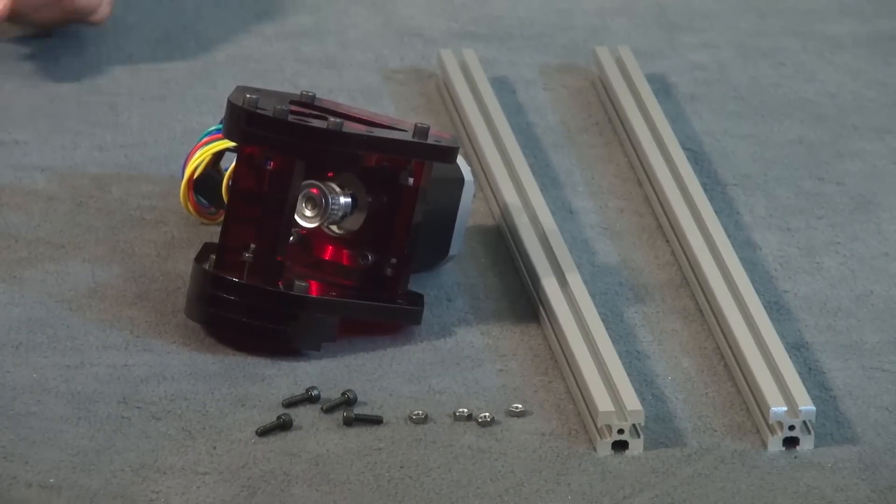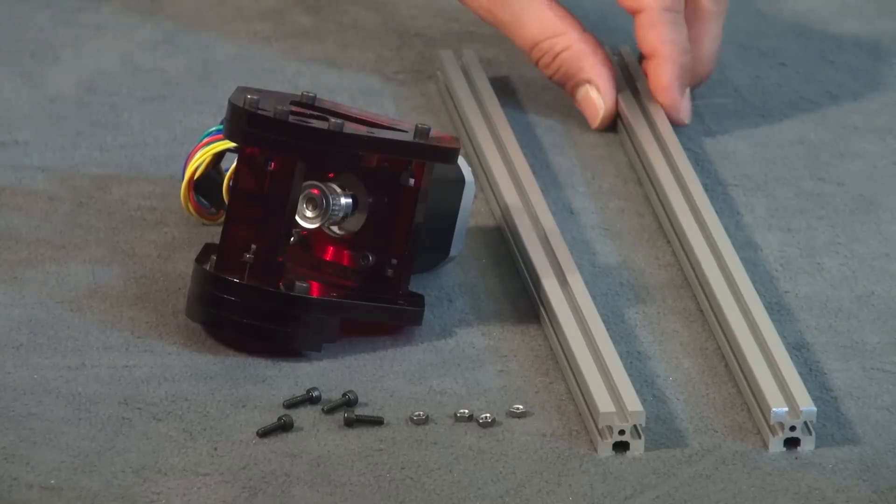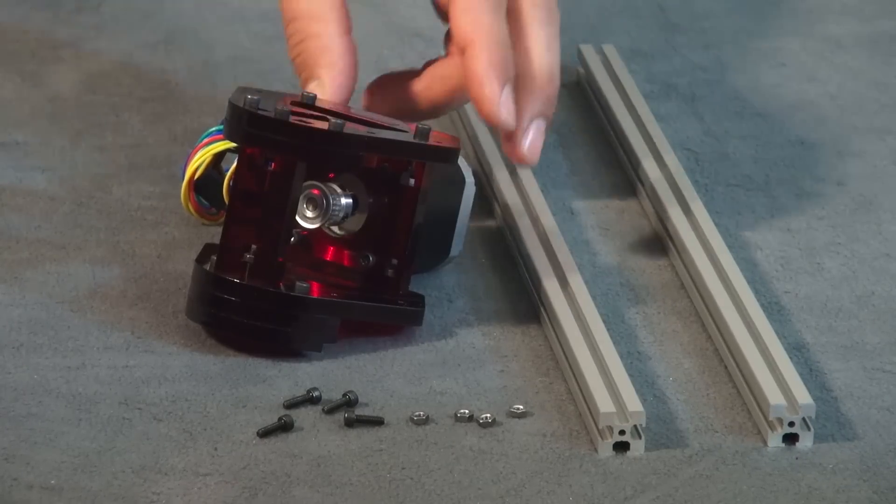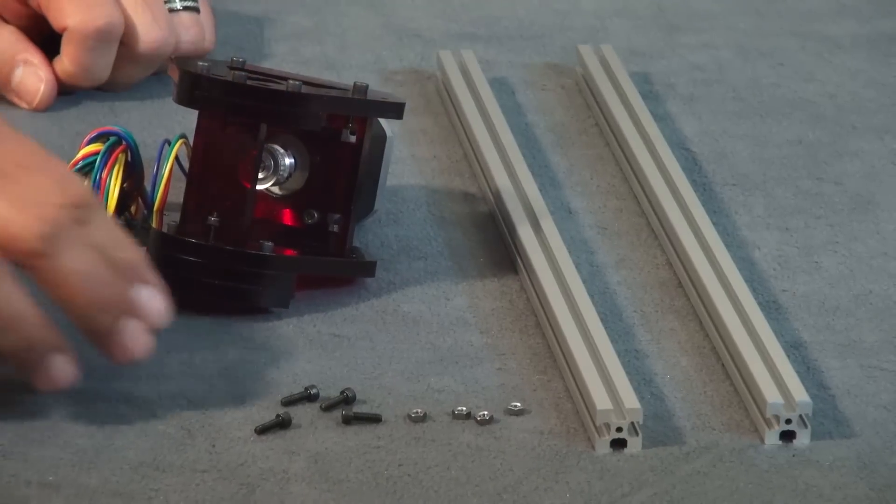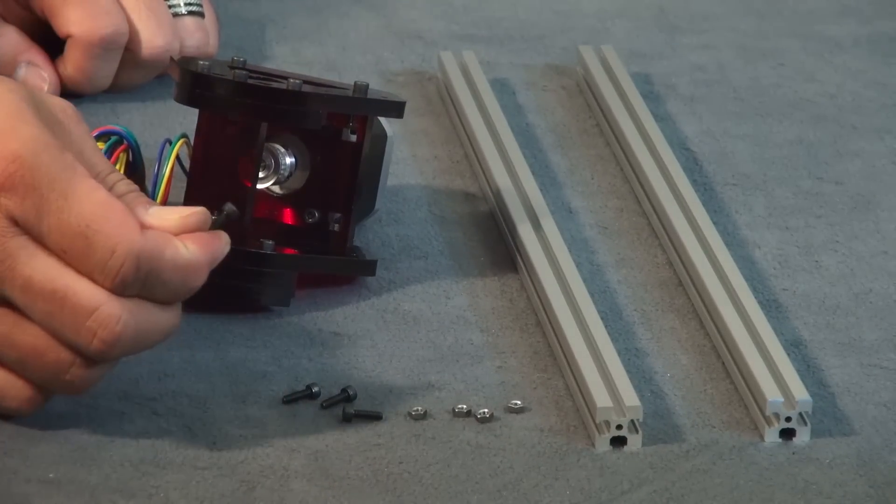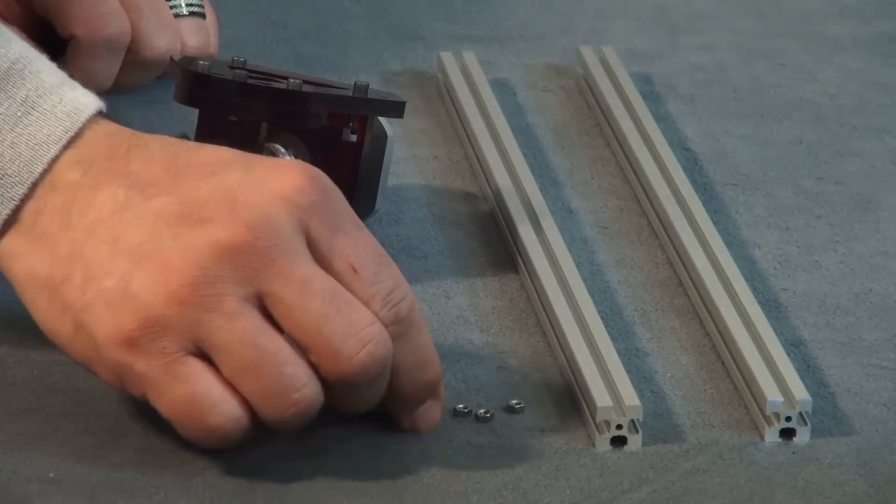Okay, now we're going to assemble the base of the printer. You're going to need the shorter aluminum bars, the stepper motor assembly, M3 by 10 millimeter bolts, and M3 nuts.